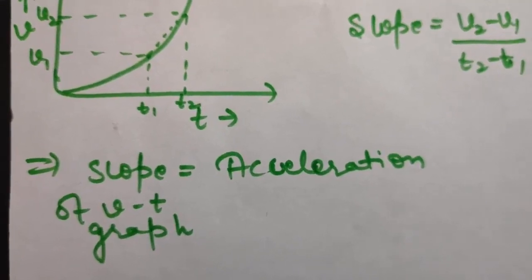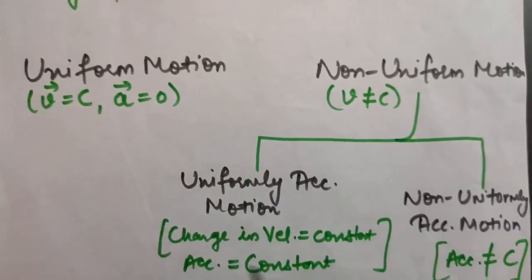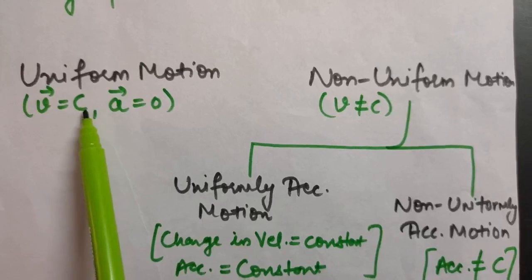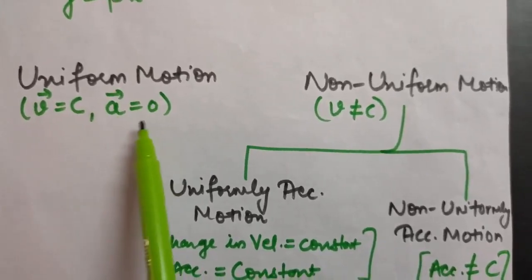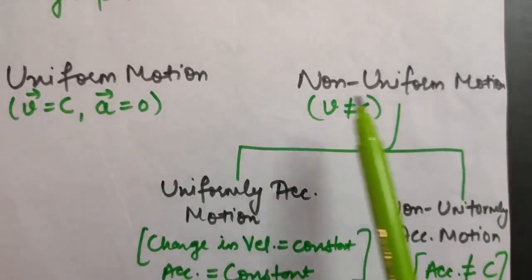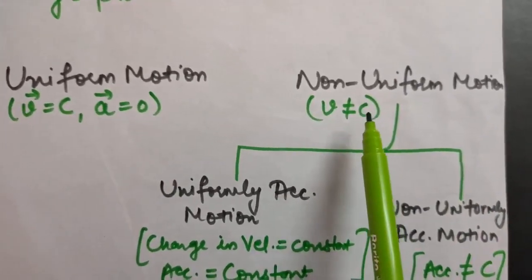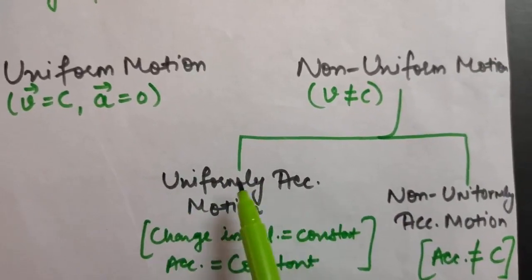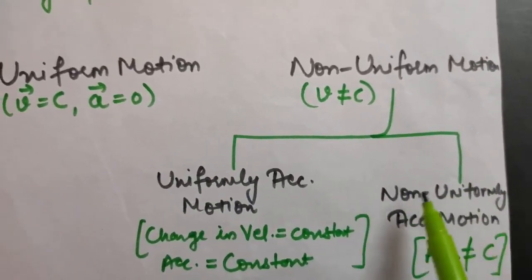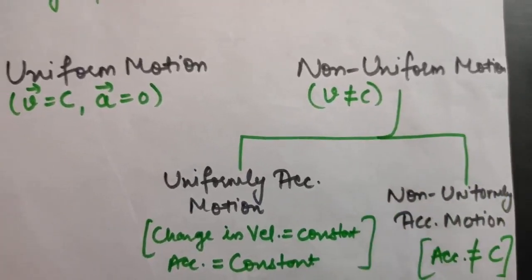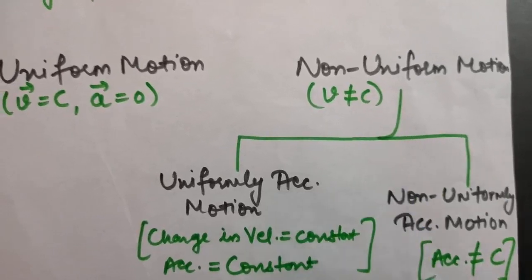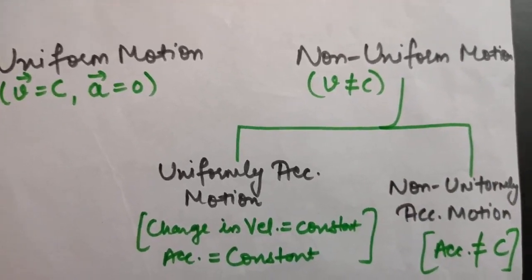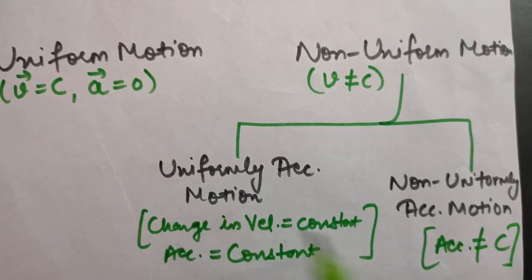For uniform motion, velocity is constant, change in velocity is zero, and therefore acceleration is zero. Non-uniform motion is also called accelerated motion because if velocity is not constant, there will be some acceleration.